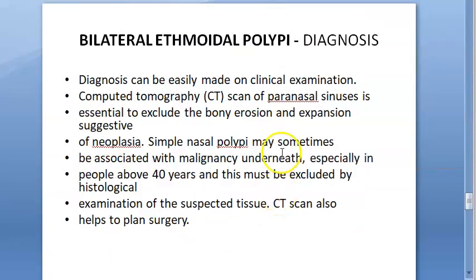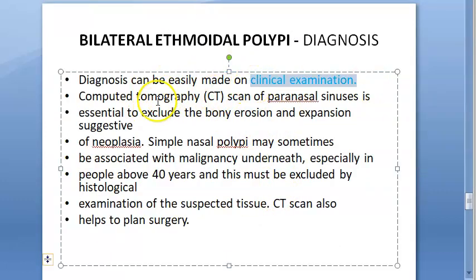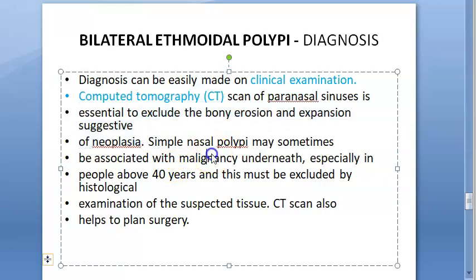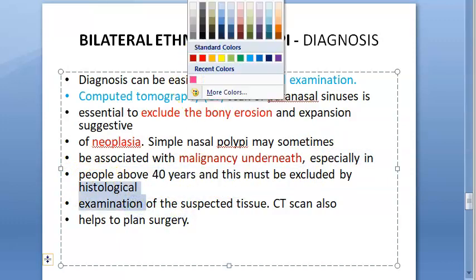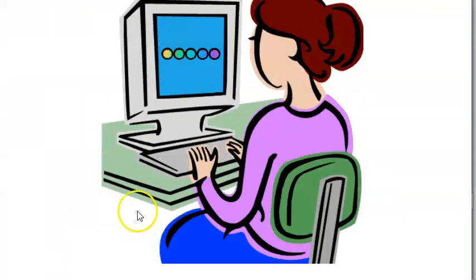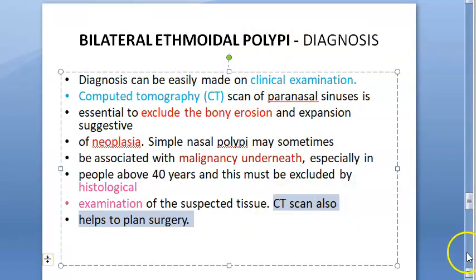For diagnosis, clinical examination itself is often enough, but you can do a CT scan of the paranasal sinuses. CT is preferred over X-ray because you want to see mucus and mucous membrane changes. CT can exclude bony erosion and neoplasia — as there can sometimes be malignancy underlying an innocent-looking polyp, especially in people above 40. Histological examination should be done in suspected cases, and CT also helps plan surgery.